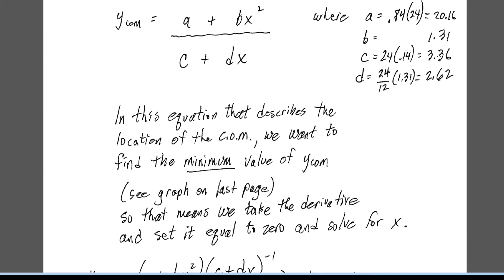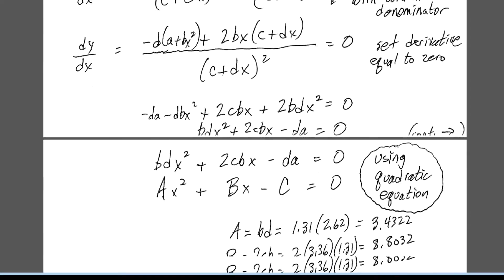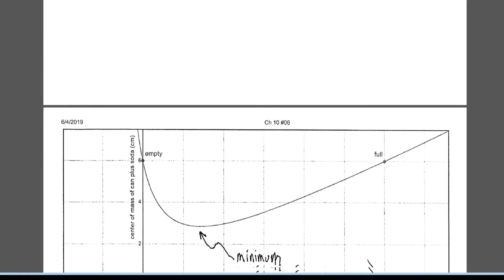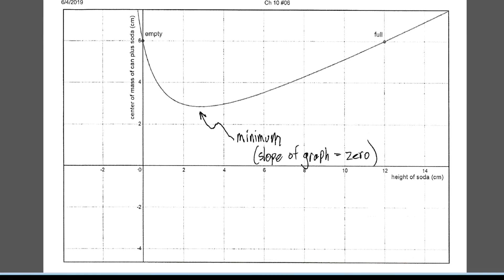Plugging in the numbers to show what it looks like, we use Desmos to graph the function. When the height of the soda is at 12 centimeters, the center of mass is at 6 — halfway. When the can is empty at 0 centimeters, the center of mass is again at 6 centimeters. As the can empties, the center of mass lowers, then rises back to 6. The minimum — where the slope is zero — is the spot we're looking for.